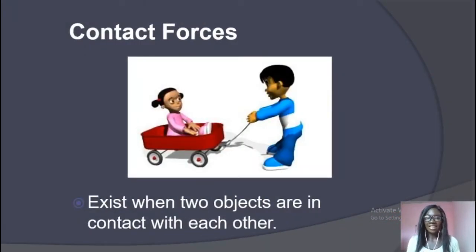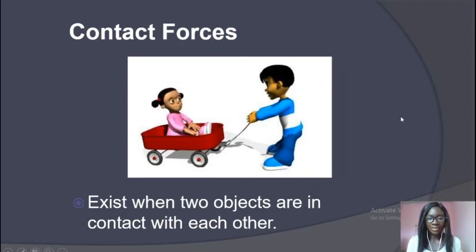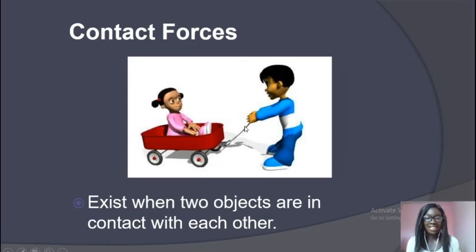So now we're going to be taking it step by step. Try to jot things down and write things in your notes. Contact force occurs when two objects are in contact with each other. For example, a boy rolling his baby on a cart — they are in contact with each other. The force acting here is a contact force. We can also have applied force and air resistance if the cart stops.